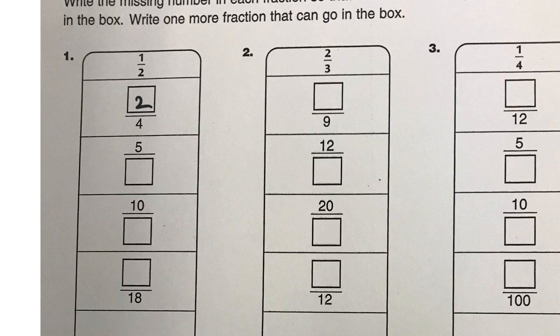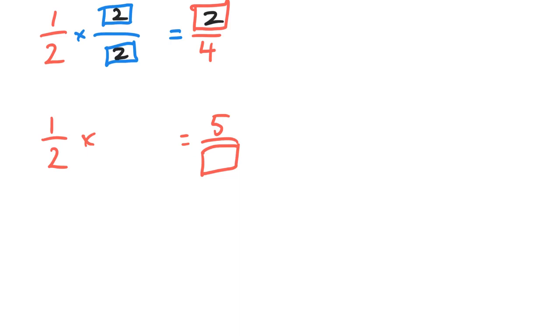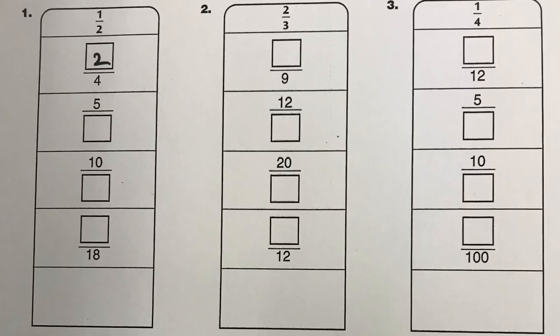Next, we have a 5 as the numerator. So now we're going to have it looking like this. So 1 half times what equals 5 something. So we can do the top part first. 1 times 5 equals 5. So if I put the 5 down there, then we've got the rest figured out. So 1 half is equal to 5 tenths.